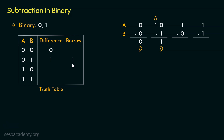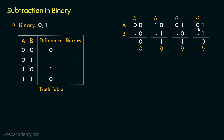Coming to the next case, 1 minus 0: the minuend is 1 and the subtrahend is 0, so the difference is 1. For the last case, A is 1 and B is 1, giving a difference of 0. So from all four cases, only when A is 0 and B is 1 do we get both a difference of 1 and a borrow of 1. For all other cases, the borrow is 0. This completes the truth table for binary subtraction.